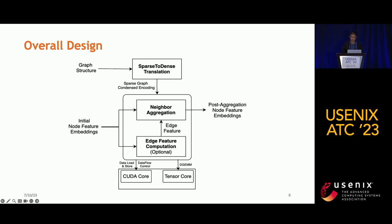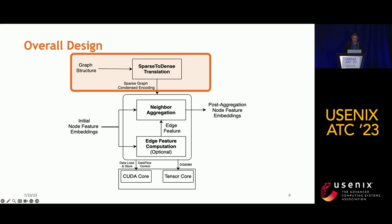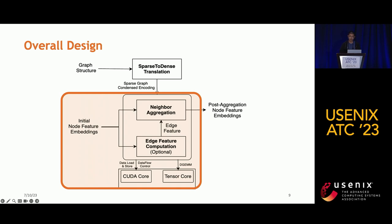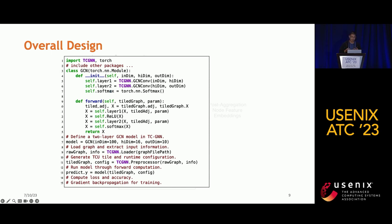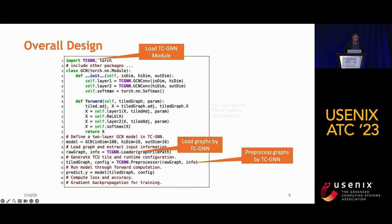The overall TCGN design takes the input graph into our sparse graph translation module to compress sparse graphs into dense tiles for tensor core processing. The compressed graph along with initial node feature embeddings enters the main computation module for either neighbor aggregation or node feature generation, leveraging CUDA cores for data loading and tensor cores for computation. The output is an updated node embedding matrix. The basic programming pattern requires only three steps: load the TCGN module, load the graph, and preprocess — with all other patterns similar to PyTorch.